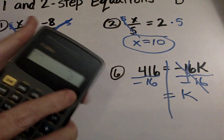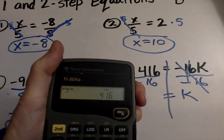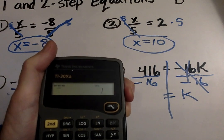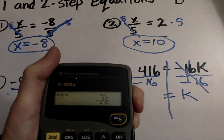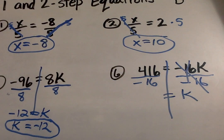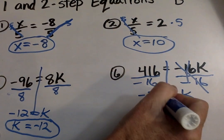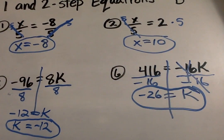And K equals. Again, we take our calculator. I'm going to put 416. Make sure I put it in there properly. Divide by 16. And I'm going to make it a negative. Negative 26. And you're done.